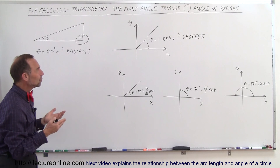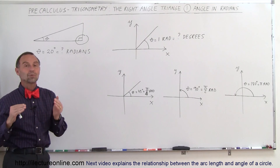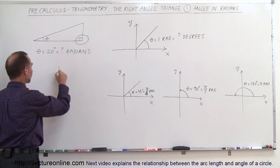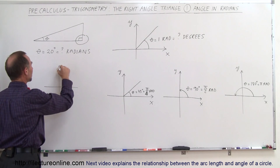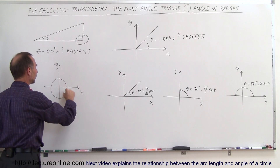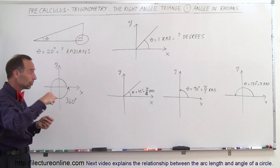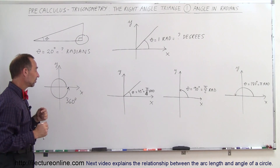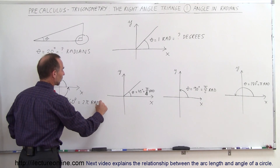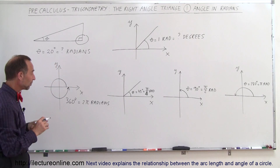Starting out, sometimes angles are expressed in degrees and sometimes in radians. Just to make sure we understand the difference: when you go all the way around a circle — starting from the x-axis and going all the way around — that is a 360-degree angle. One complete circle represents 360 degrees, which is equal to 2π radians. We sometimes write RAD to represent radians.